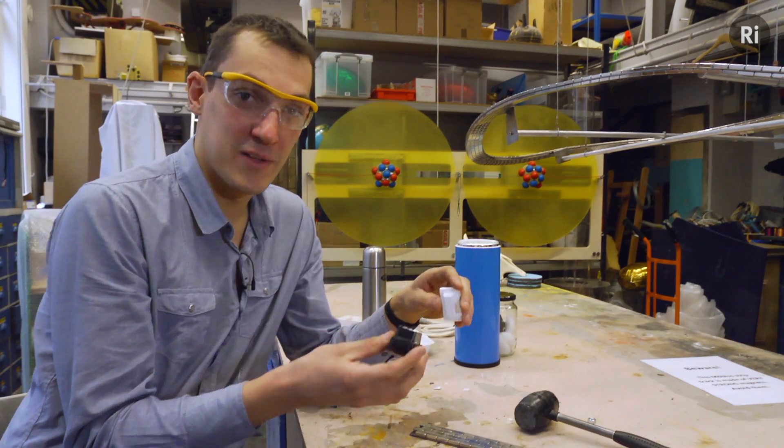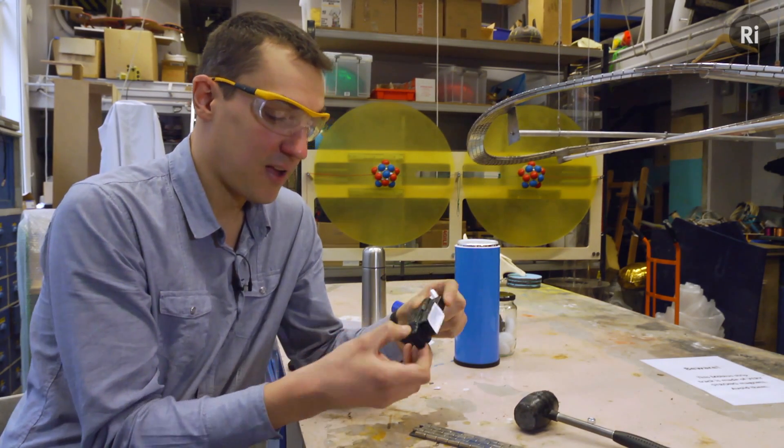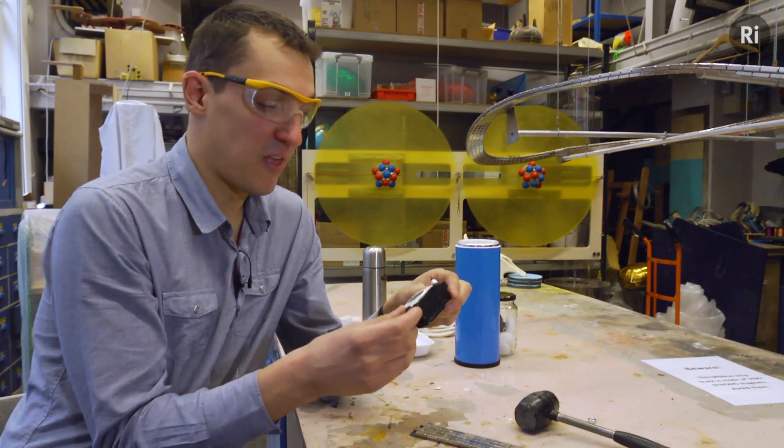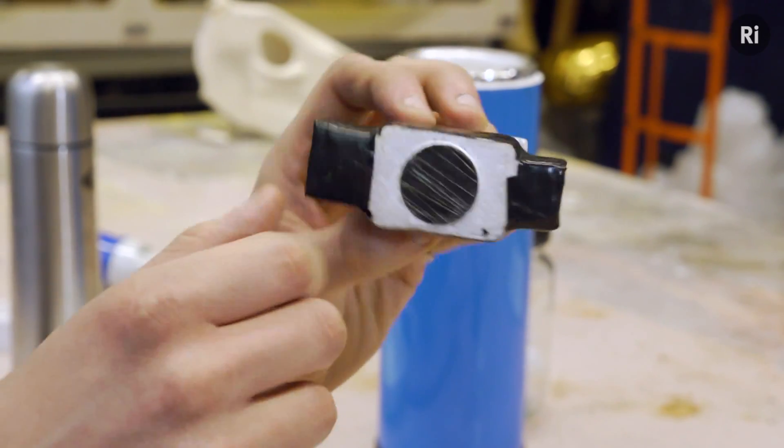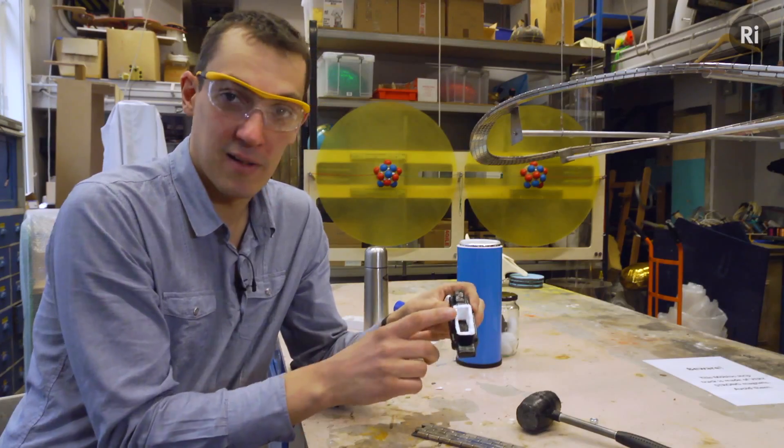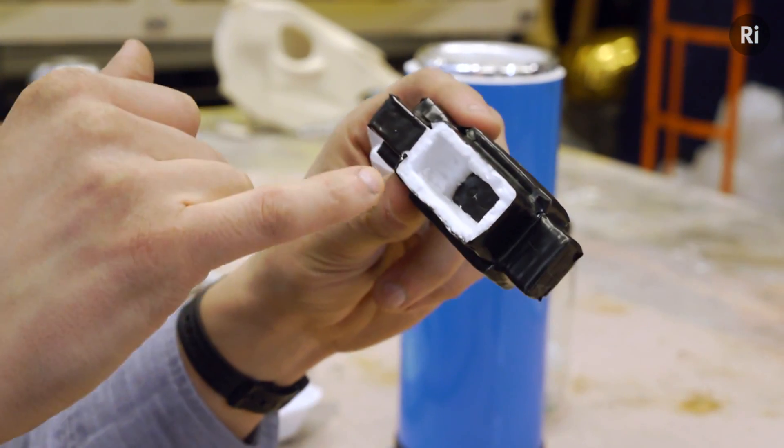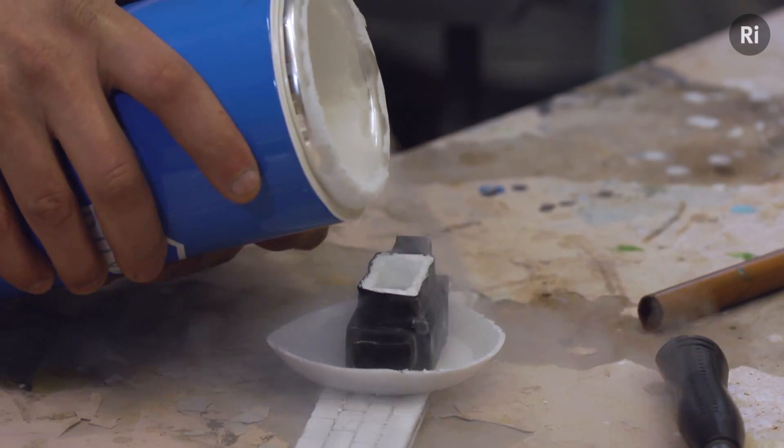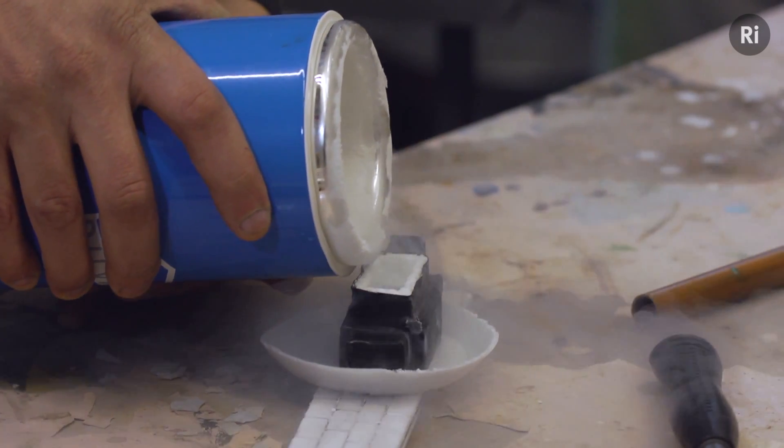The solution we decided on for the Christmas lectures last year was to make a little train/boat thing. We've got a piece of the superconductor embedded in polystyrene with its own little reservoir for liquid nitrogen. Let's cool this down again.